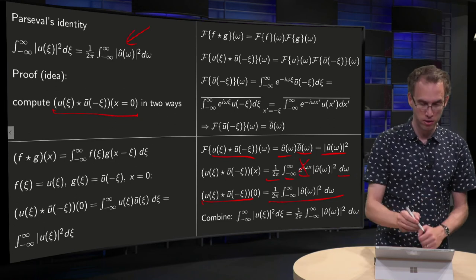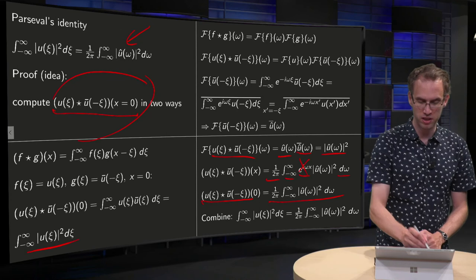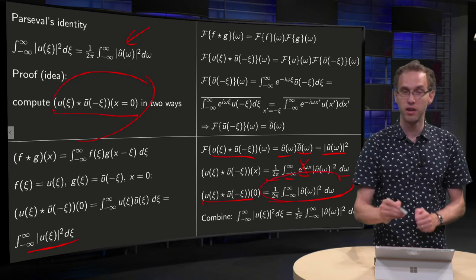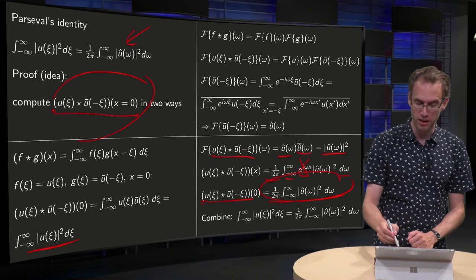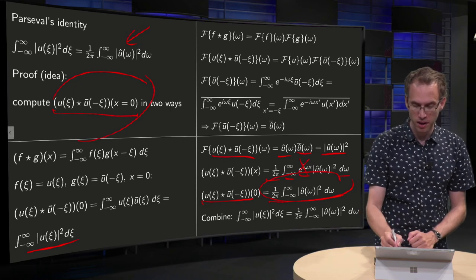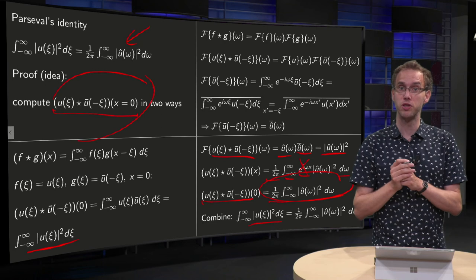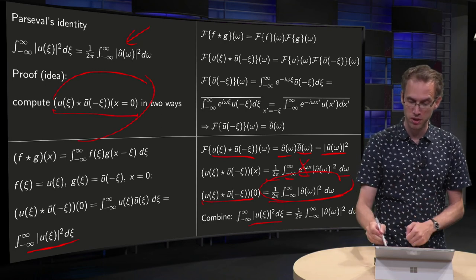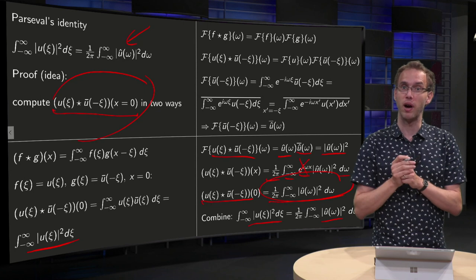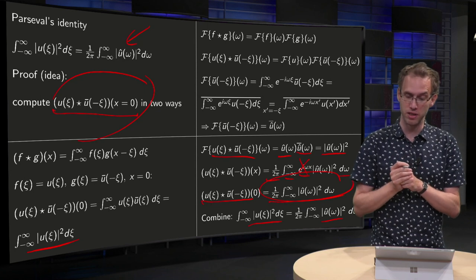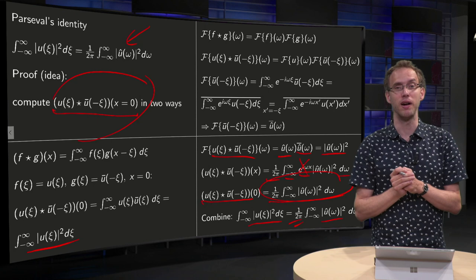Now we have computed this quantity in two ways: we found the left-hand side and we found the right-hand side. Since those two are equal, combining them gives: ∫ |u(ψ)|² dψ = (1/2π) ∫ |û(ω)|² dω, which is Parseval's identity.